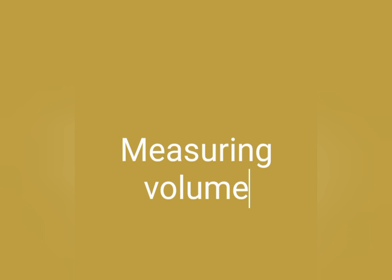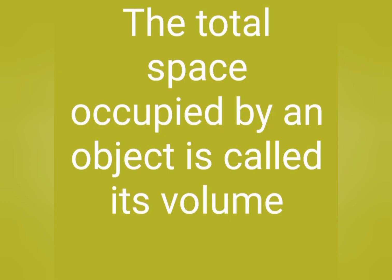Now, measuring volume. What is volume? The total space occupied by an object is called its volume. The SI unit of volume is meter cube. For a cube, the volume is side cube. For a cuboid structure, the volume is length into breadth into height meter cube.